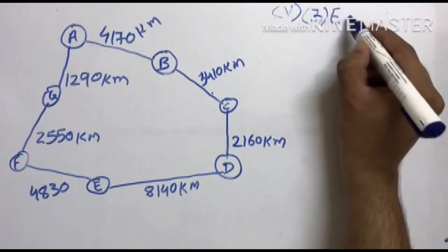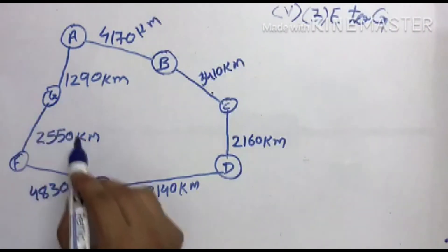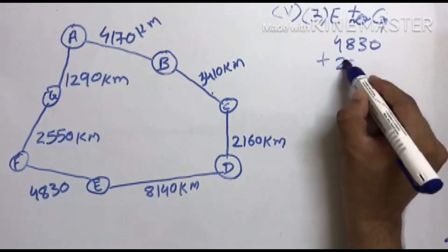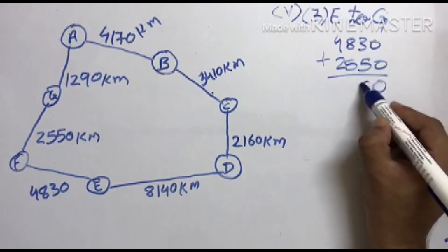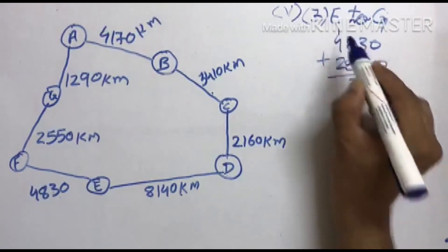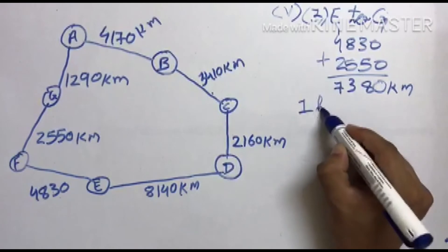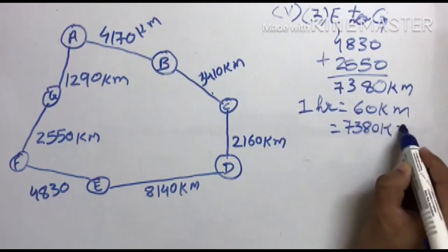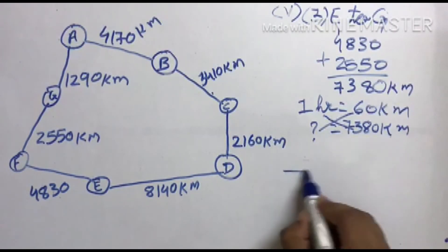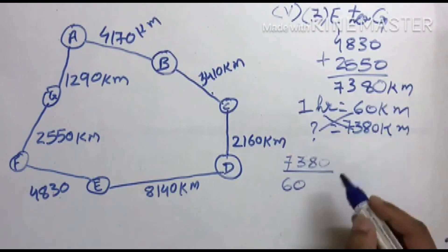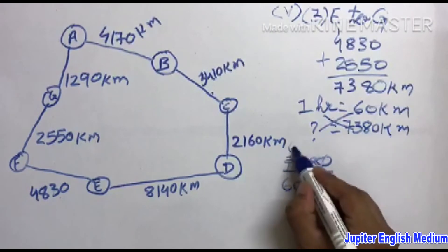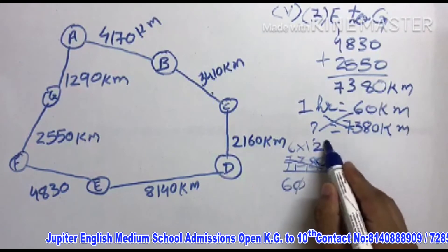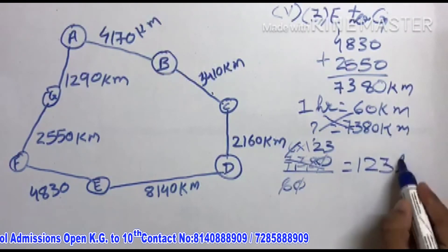Fifth question, sub-question 3: E to G. E से G पहुंचने के लिए पहले E से F और F से G add करने पड़ेंगे: 4830 + 2550 = 7380 km. One hour में 60 km, तो 7380 ÷ 60 = 123 hours. E से G पहुंचने के लिए 123 hours लगते हैं। Understood.